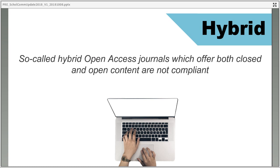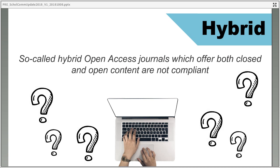These developments have led to concerns amongst the research community that they're going to be restricted when it comes to choosing where they can publish, particularly in disciplines where publishing in certain journal titles earns more academic credit. Researchers don't want the choice of where to publish taken away. In a Cambridge context that's particularly important because Cambridge has a deliberate policy of not telling researchers where they should and shouldn't publish — instead offering them tools to make an informed choice.